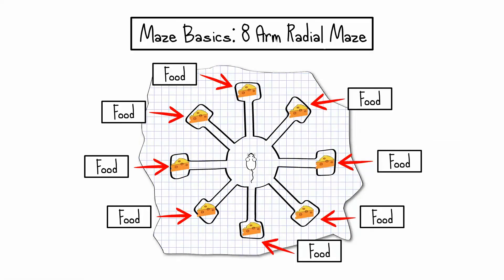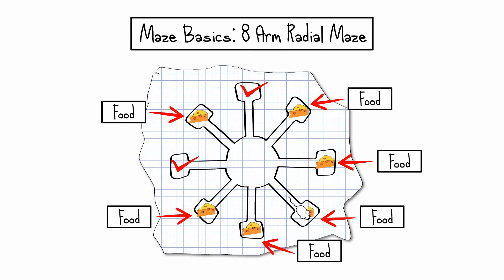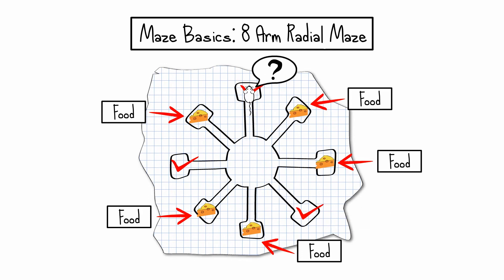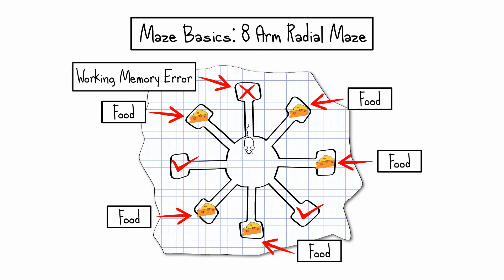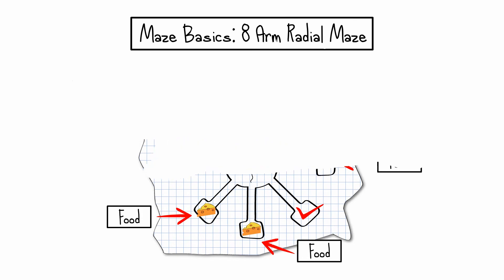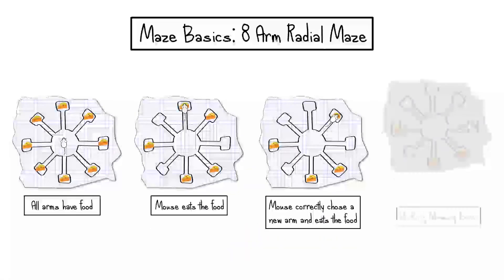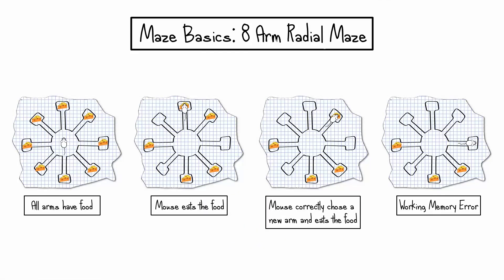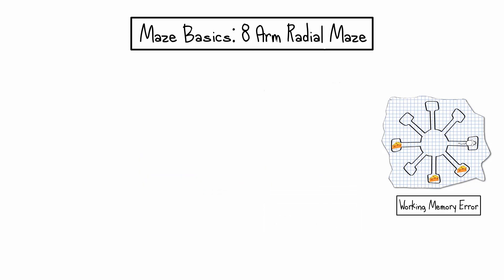The following sample task is designed to test working memory. All arms are baited and the mouse waits for the doors to open. With the first choice, the mouse always gets the food. With the second choice, the mouse may correctly choose a new arm and receive more food. However, if the mouse returns to an arm it already chose, it commits a working memory error and doesn't receive a treat. The trial ends when the mouse gets all the food, and the number of working memory errors per trial is limitless.